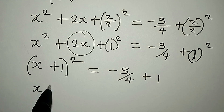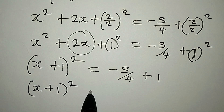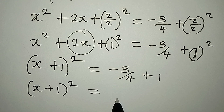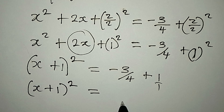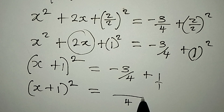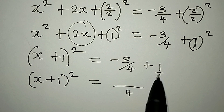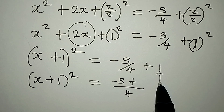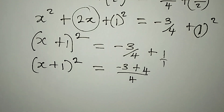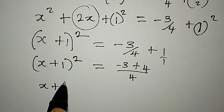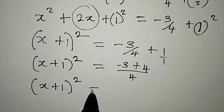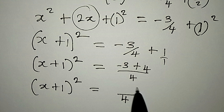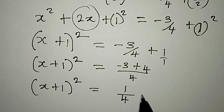From here we have (x + 1)² equal to... we take 4 as the LCM. 4 divided by 4 is 1, times minus 3 is minus 3, plus 4 divided by 1 is 4 times 1 is 4. So (x + 1)² equals, with LCM of 4, minus 3 plus 4 gives plus 1 over 4.